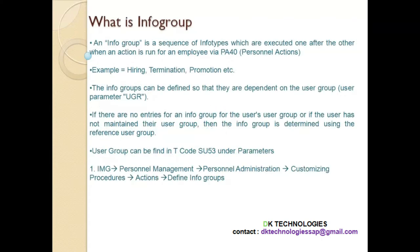First, let us understand what is Info Group. An Info Group is a sequence of Info Types — meaning a group of Info Types. It is a sequence, meaning one after the other. An Info Group is a sequence of Info Types which are executed one after the other when an action is run for an employee through the transaction code PA40. Info Group can be created for hiring, termination, or any purpose related to an action.